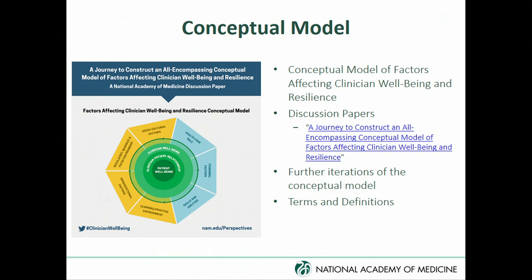We also realized that as all these work groups began to develop their efforts, they needed some kind of a model to work off of, so we tried to work as quickly as possible. This was completed relatively quickly, beginning back in July. For you to read a little more about how it all evolved, there's a paper that came out in January of this year titled, "A Journey to Construct an All-Encompassing Conceptual Model of Factors Affecting Clinician Well-Being and Resilience."